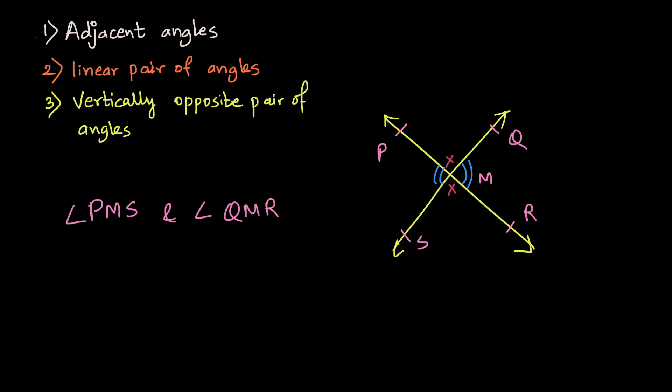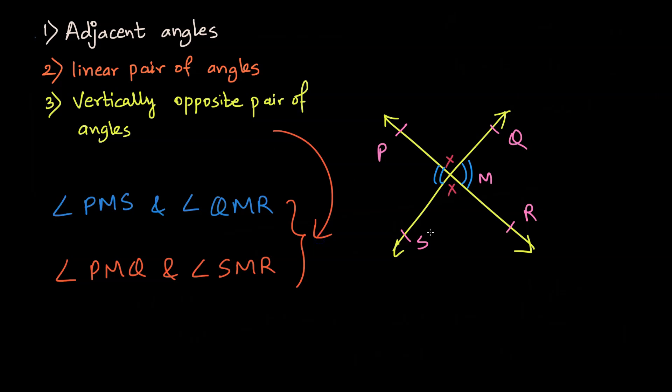Also the vertically opposite angles are congruent. So remember that as a fact. And the other pair is, I should have written that in blue, so let me write that quickly in blue. So angle PMS and angle QMR are the opposite pair of angles. The other one I'll write in the pink color: angle PMQ and angle SMR. These are the vertically opposite pair of angles.